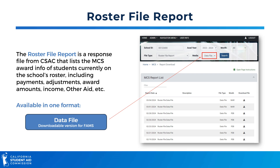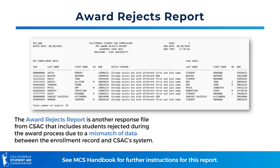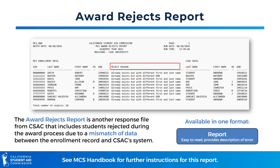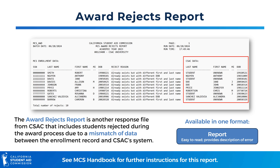Next, we'll review the award rejects report. This report includes a list of students who were rejected during the award process due to a mismatch of data between the enrollment record and the CSAC system. Students will continue to appear on this report until their record is fixed. This report is available in one format: an easy-to-read report. On the left-hand side, you'll see the social security number, name, and date of birth of each rejected student provided on the school's enrollment file, along with each student record's corresponding reject reason. On the right-hand side, you'll see what name and date of birth are listed for the student in the CSAC system.